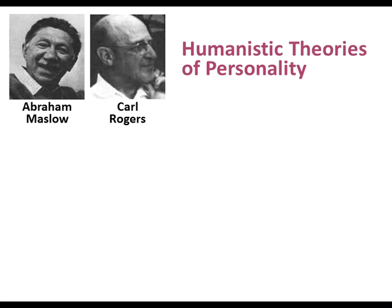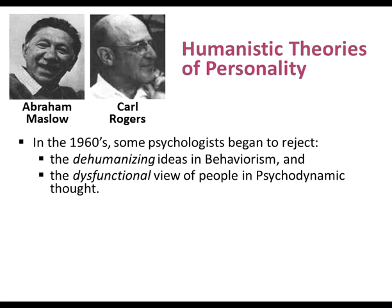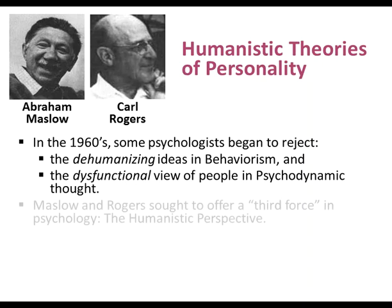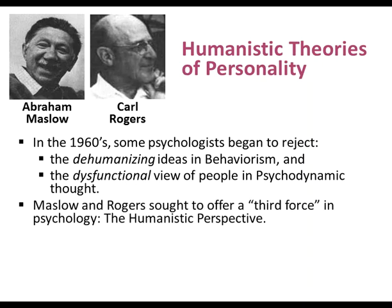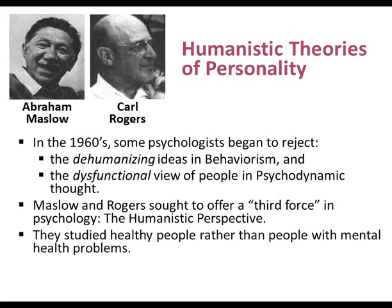Abraham Maslow and Carl Rogers in the 1960s began to reject the dehumanizing ideas in behaviorism and the dysfunctional view of people in psychodynamic thought. They sought to offer a third force in psychology — the humanistic perspective — which is different from both behaviorism and the psychodynamic view. They studied healthy people rather than people with mental health problems.